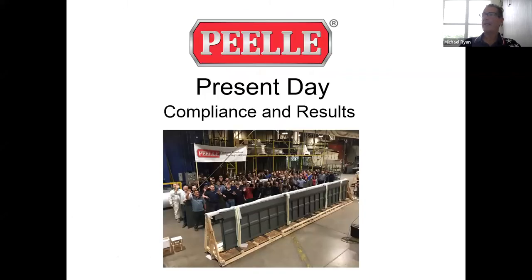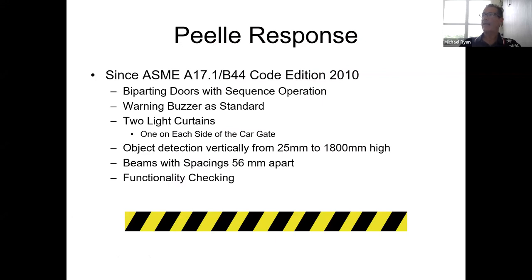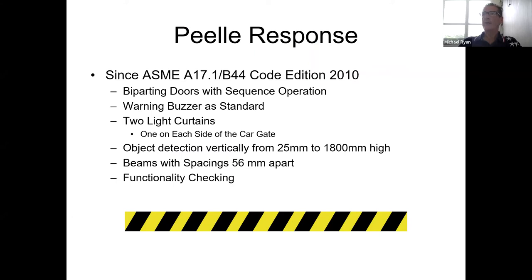How did Peely address that? In the 2010 version of the code, all of our doors that are bi-parting are provided with sequence operation with a warning buzzer. We provide two light curtains, protecting anywhere from 25 millimeters to six feet above the platform. We have two beams that are 56 millimeters apart, and of course we have that functionality test. I don't think we're any different, because anybody in this business has to do the same — this is what the code requires.